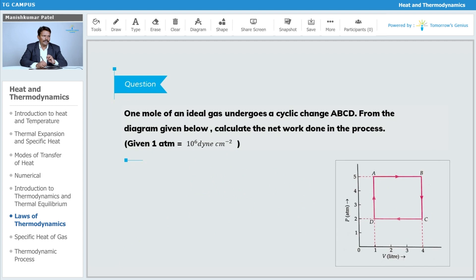For example, one mole of an ideal gas undergoes a cyclic change ABCD. From the given diagram, calculate the net work done in the process. We just discussed that in case of a cyclic process,